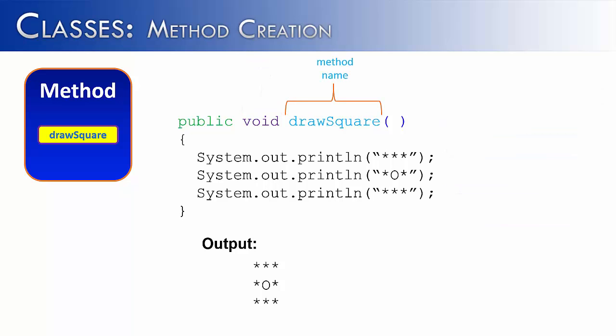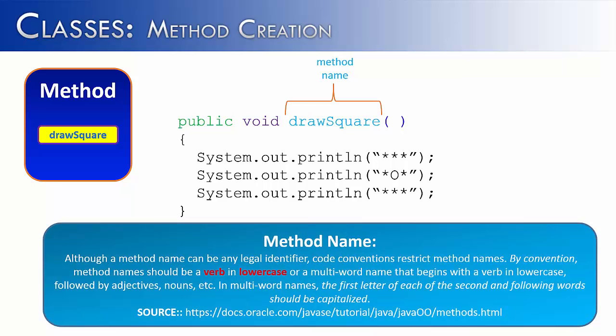Next we have the method name. The method name can really be anything, but it should follow some rules. The rules governing what a method should be called are called convention. I've copied this from the Oracle site, what a method name should be. You'll notice it says a legal identifier, and by convention it should be a verb in lowercase. So we see we have a verb called draw, and we have square which is not a verb, but if we read on further we're going to see why. But I also want you to notice that it is lowercase.